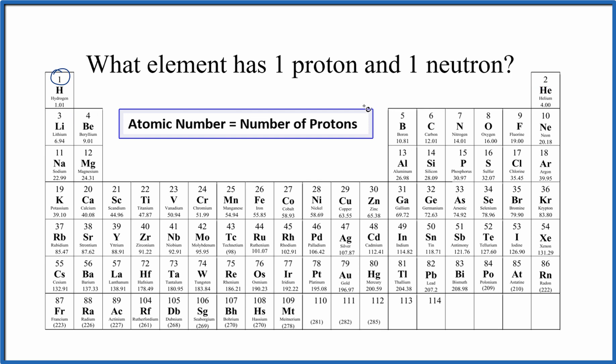So atomic number one, that's right here. That's hydrogen. The element with one proton and one neutron is hydrogen.